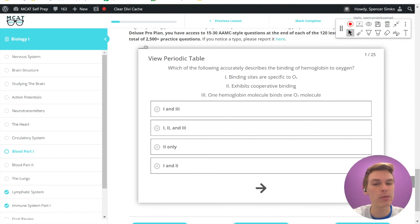And the last one says that one hemoglobin molecule binds to one O2 molecule. Remember, each subunit has its own heme group, which means that one hemoglobin molecule binds to four oxygen molecules. This means that the correct answer choice is answer choice C.